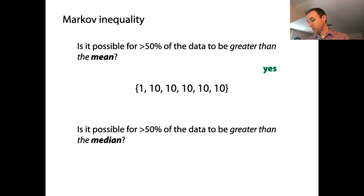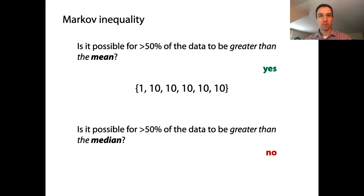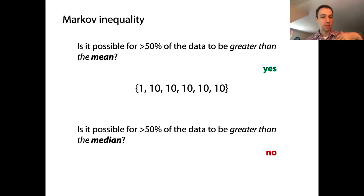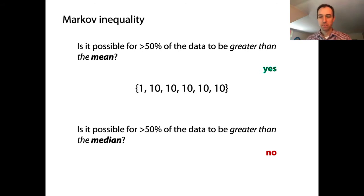Now, is it possible for more than half of the data points to be greater than the median? No. That's just by definition of the median. If we take the data points, put them in order, and pick the one in the middle, that's the median. If more than half the data are greater than the median, that means it's not in the middle — a contradiction. So this is not possible. There's a big difference between whether we're talking about mean or median here.